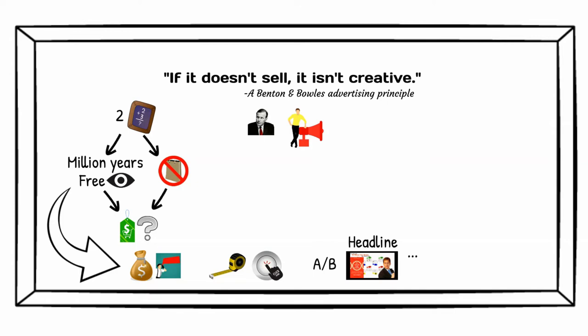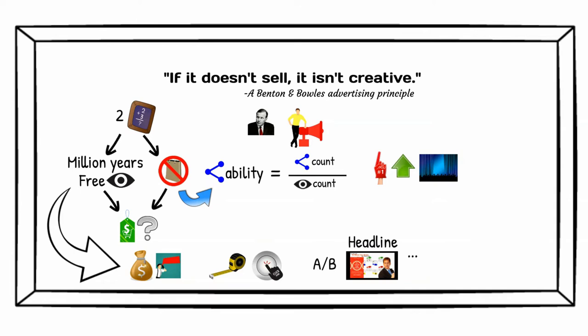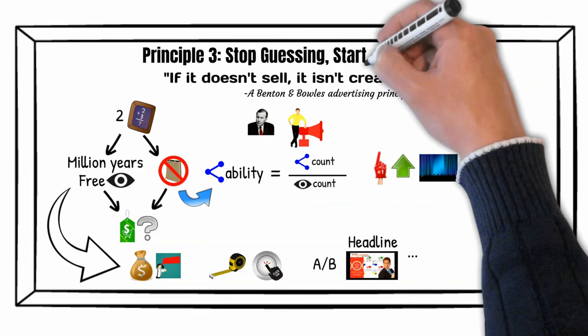Now let's shortly address the second problem. To determine how good your content — and not the ad — is, one option on platforms which allow it, like YouTube or Facebook, is to determine how "shareable" it is by dividing its share count by its view count. Shareable content is the number one way to grow quickly and keep fans engaged, says author Brendan Cain in his book One Million Followers. Principle 3: Stop guessing, start measuring.